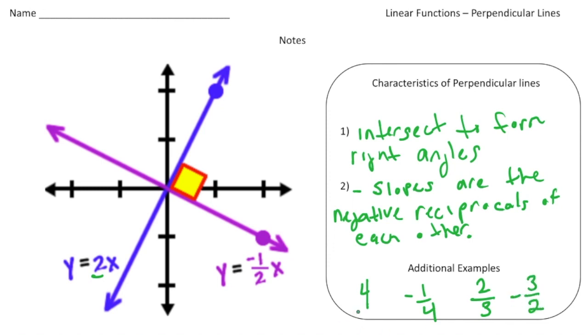Alright, if you notice, if you multiply the slopes, you'll always get negative one. So if I did four times negative one-fourth, you'd get negative one. If I did two-thirds times negative three-halves, you'd also get negative one. Alright, so knowing that, let's turn the page.